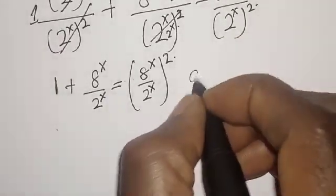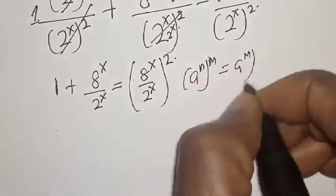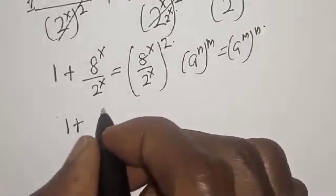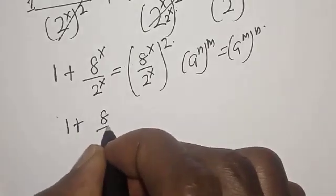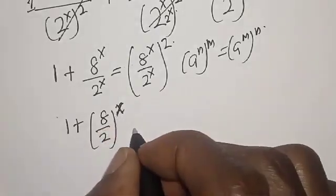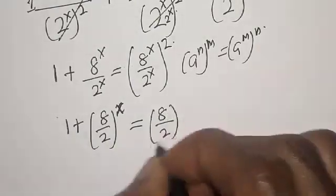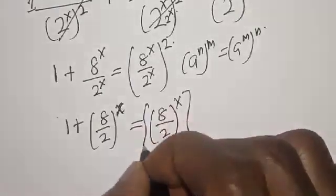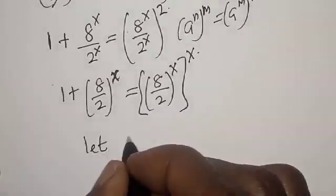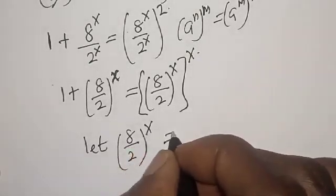Remember that a raised to power n raised to power m is equal to a raised to power m raised to power n. Now we have 1 plus 8 over 2, all raised to power s, is equal to 8 over 2, all raised to power s. Let y equal 8 over 2, all raised to power s.